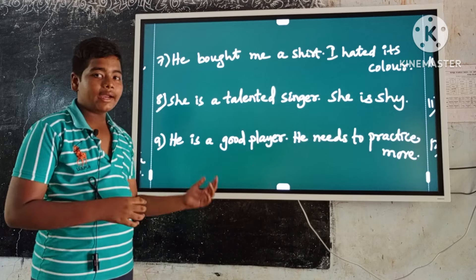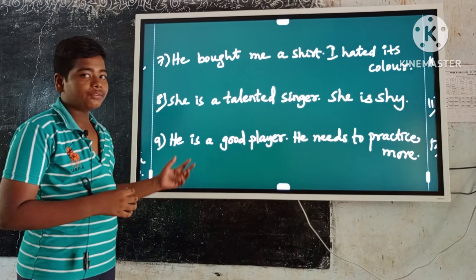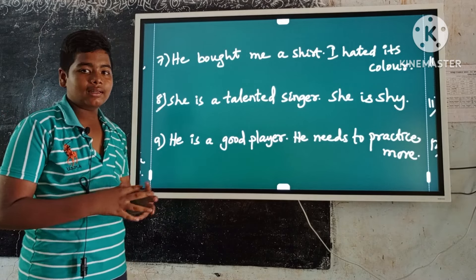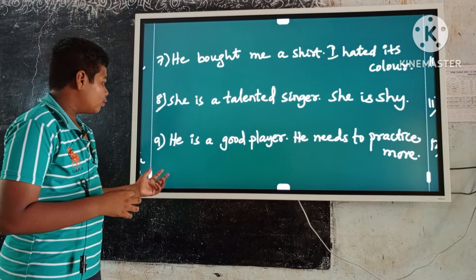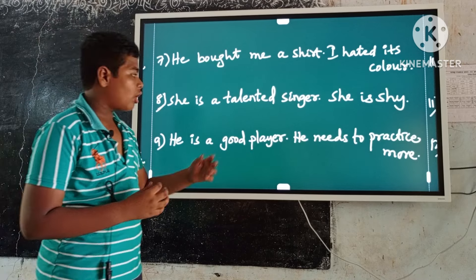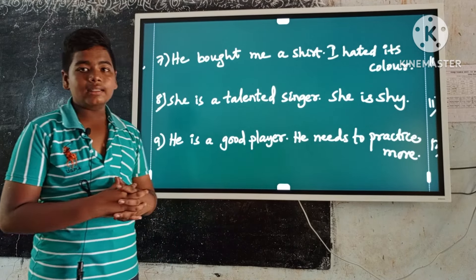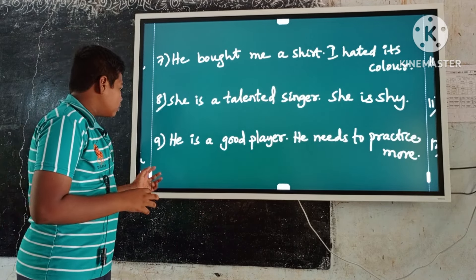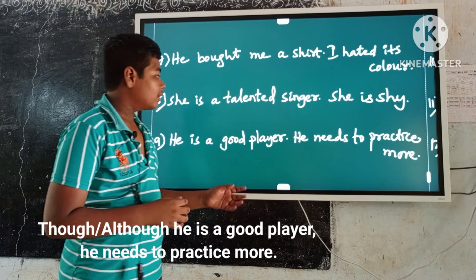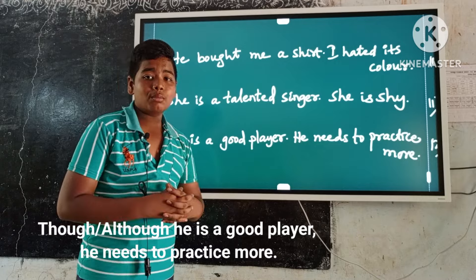Example number nine: She is a good player. These are contrast ideas. Here the first occurring sentence is 'she is a good player.' Keep though or although before it, and a comma before the second sentence. So the answer is: Though or although she is a good player, she needs to practice more.